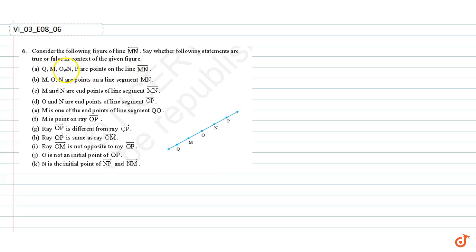Statement A: Q, M, O, N, P are points on the line MN. That is true.